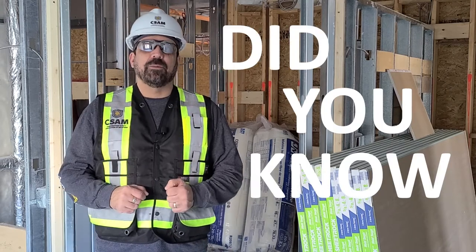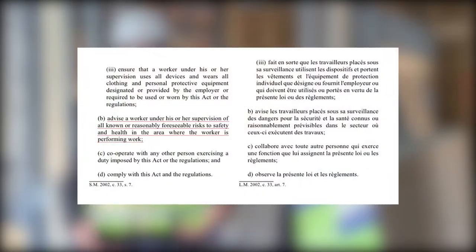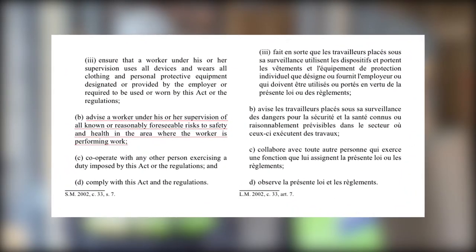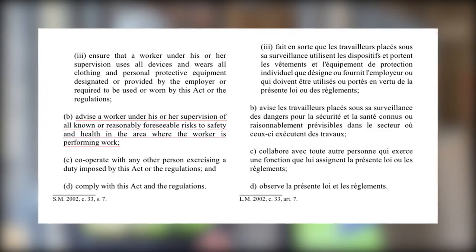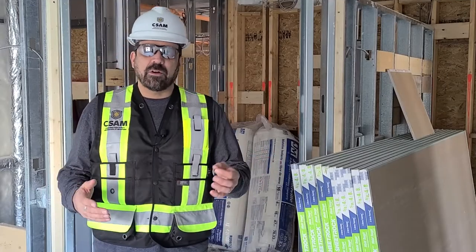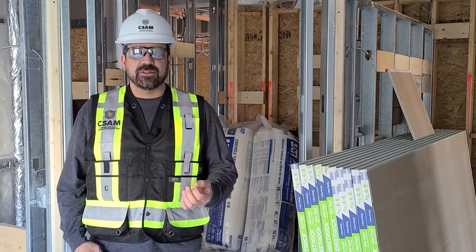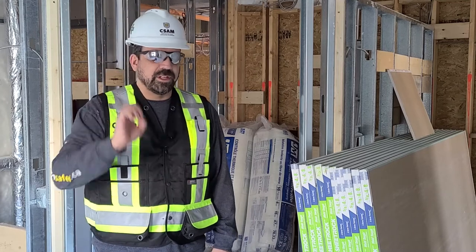Did you know that in Manitoba, it is a requirement in the Workplace Safety and Health Act under the duties of a supervisor to ensure that workers are made aware of all known or foreseeable risks to the safety and health in the area where the work is being performed? How do you verify or prove that your workers have been made aware of these risks? By completing the document identifying those hazards and the applicable control measures — that's your due diligence.